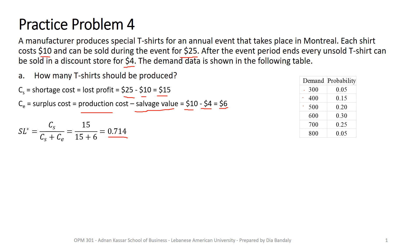Let's make sure you understand what's happening. The value 0.15 was the probability that demand was exactly equal to 400. But to compare with the service level — which is a cumulative probability — we need the cumulative probability for every value of demand. So 0.2 is the probability that demand is less than or equal to 400, which means demand equals 400 or demand equals 300. We sum those and get 0.2, and do the same for all other values.